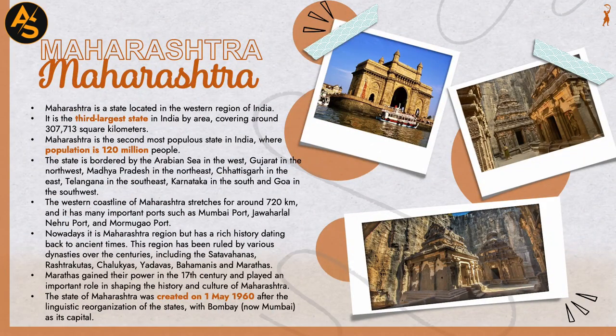Introduction of Maharashtra. Maharashtra is a state located in the western region of India. It is the third largest state in India by area, covering around 307,713 square kilometers. Maharashtra is the second most populous state in India, with a population of 120 million people.